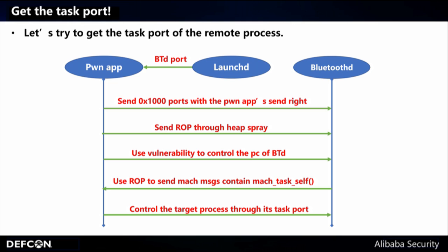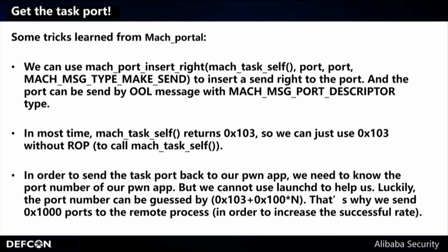Here are the steps to get the task port of a remote process. First, we ask launchd to get the port name of BluetoothD. Then we send a lot of ports with the pong app's send right to BluetoothD and send ROP through heap spray. After that we trigger the vulnerability to control the PC of BluetoothD. Then we use the ROP chain to send Mach messages which contain the task port of BluetoothD back to our pong app. After that we can control the whole target process through its task port. There are some tricks from Mach Portal developed by Ian Beer. We can use task_insert_right to insert a send right to the port, and the port can be sent via OOL messages with port description. In most cases mach_task_self returns port 103, so we can just use 103 without ROP to call mach_task_self.